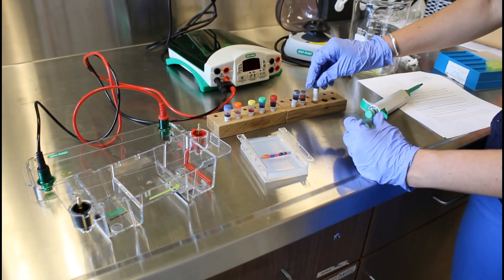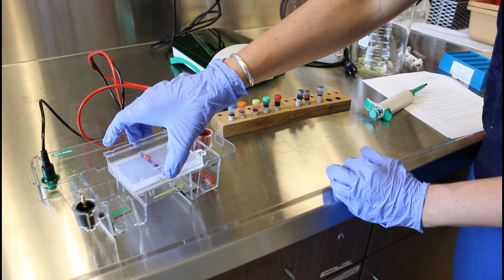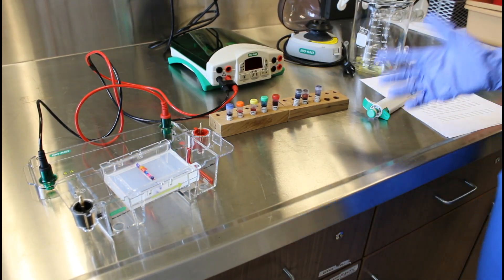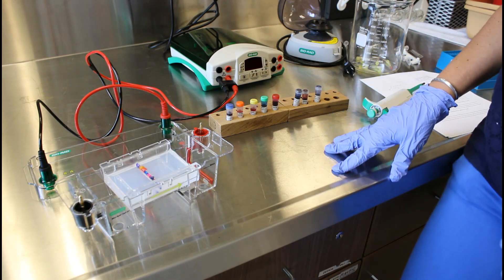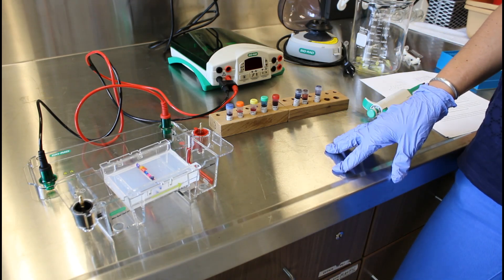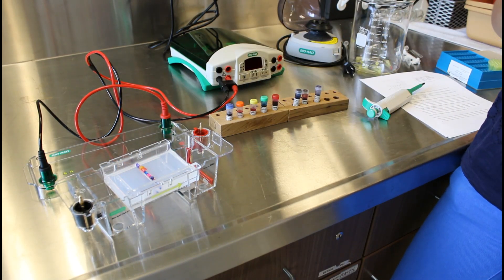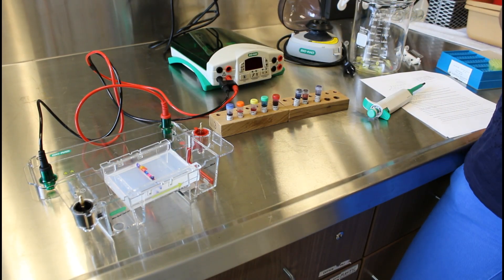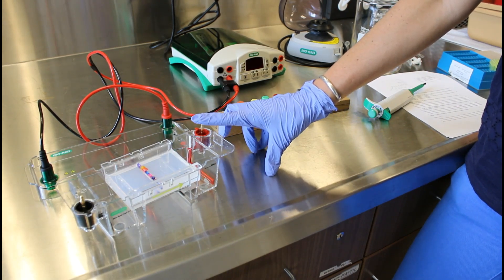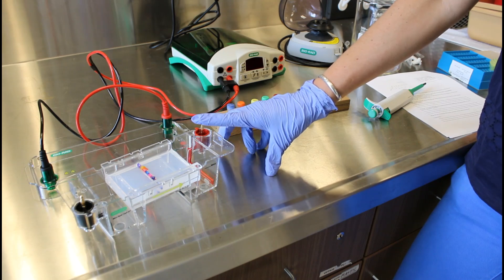The gel has been loaded with the dyes. And now I'm going to put it in the electrophoresis chamber. So normally when you do gel electrophoresis with DNA, you put all of the wells on one side of the gel. Because DNA is a negatively charged molecule, it's always going to move towards the positive electrode.